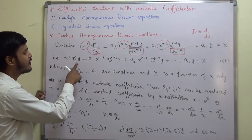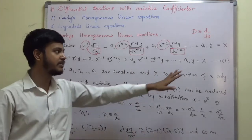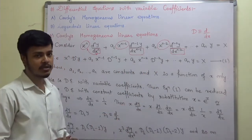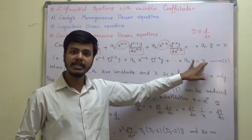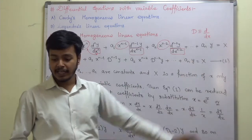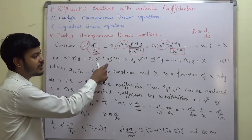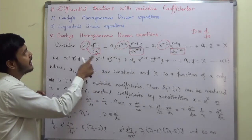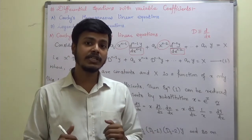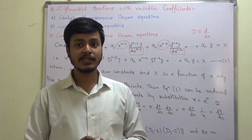So, x to the power n as it is, D^n of y, plus a1 x to the power n-1, D^(n-1) of y, and so on. This is equation 1, where a1, a2, ... are constants, and X is a function of x — like sometimes e^x times log x, or x² times sin(log x). This equation is the differential equation with variable coefficient. Our objective here is to reduce the differential equation with variable coefficient into a differential equation with constant coefficient.